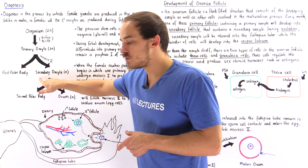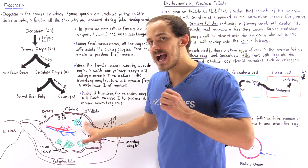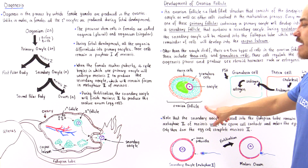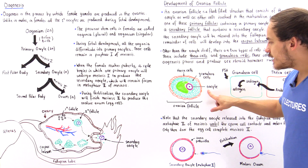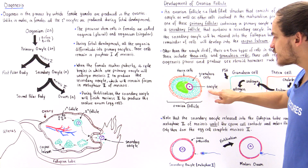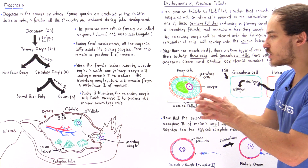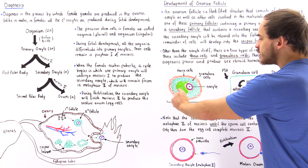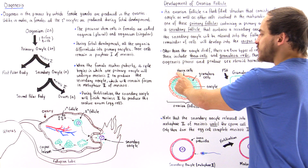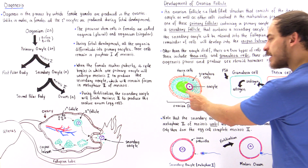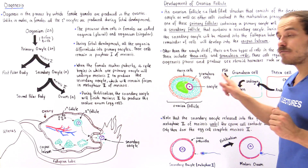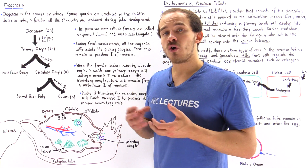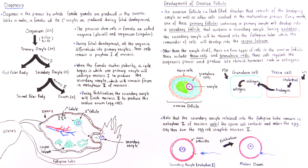We have a haploid secondary oocyte found inside the secondary follicle. Looking at the structure of the secondary ovarian follicle, the actual secondary oocyte is a small component of the entire follicle. Around that cell we have granulosa cells and theca cells, as well as fluid inside. The theca cells are stimulated by a hormone produced in the body known as luteinizing hormone, or LH.